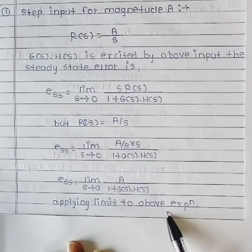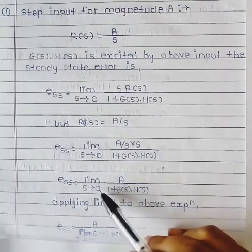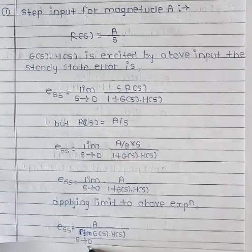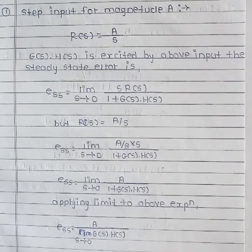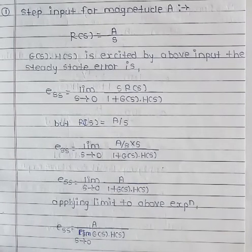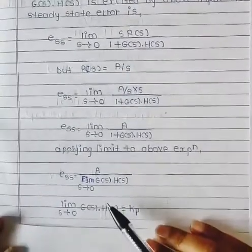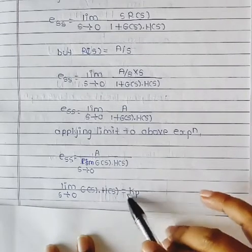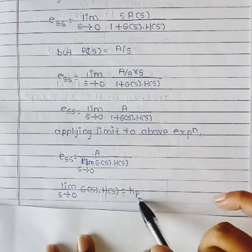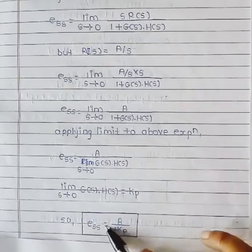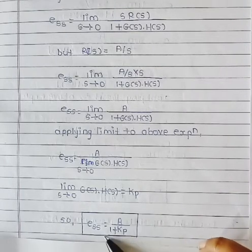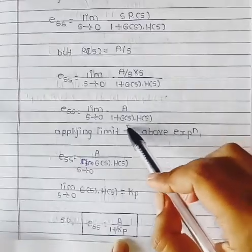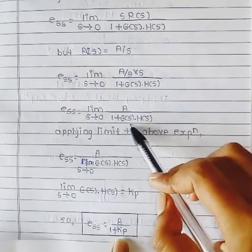Then apply limit to above expression. Steady state error is equal to A by limit S tends to 0, G(S) into H(S). Here limit S tends to 0, G(S) H(S) is equal to Kp — the position error constant for step input. So steady state error for step input, E_ss = A by 1 plus Kp.